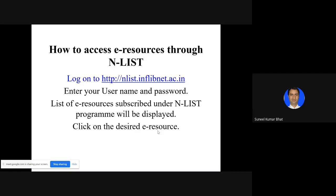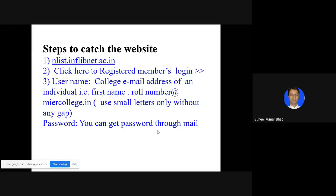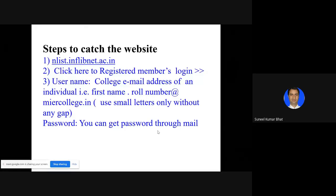I will tell you step by step how to access the website. You have to go to enlist.inflibnet.ac.in, then click the registration/members login on the right side of your screen. Your username is your first name dot roll number at the rate of Meyer College dot in, which is your college email address. You will get your password through email when you activate the link. You have not registered yourself — we have already registered all faculty members and students, and the activation link has been sent to your email. You only have to activate the link and you will get the password.